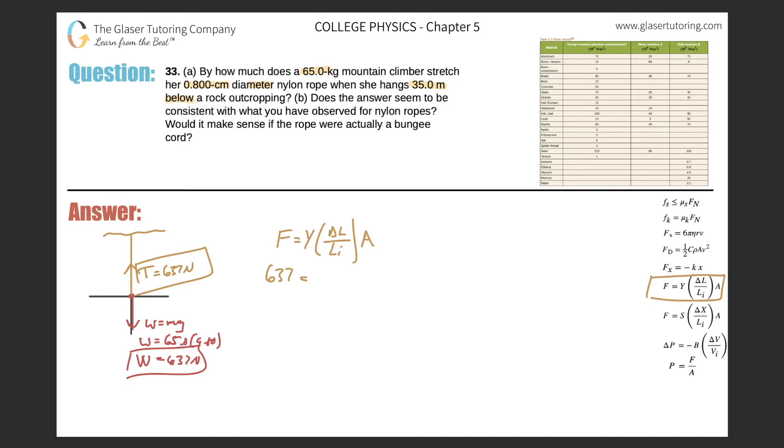Young's modulus, so we got to go look for the value in the table. We're talking about nylon rope, so here's nylon, and here's Young's modulus 5—remember they're times 10 to the 9, so this is 5 times 10 to the 9. Change in length is what we're looking for.